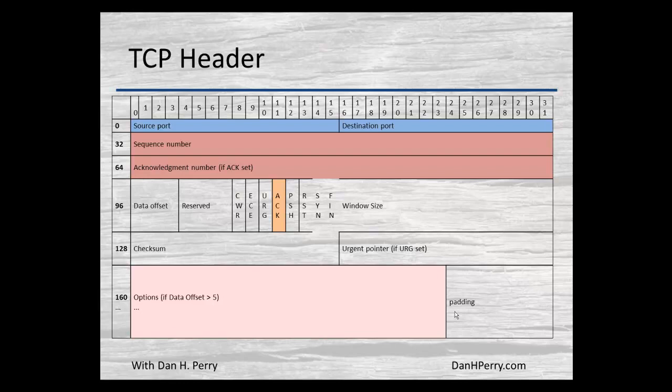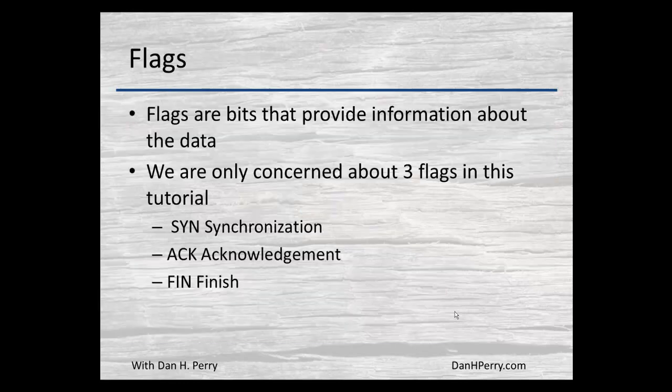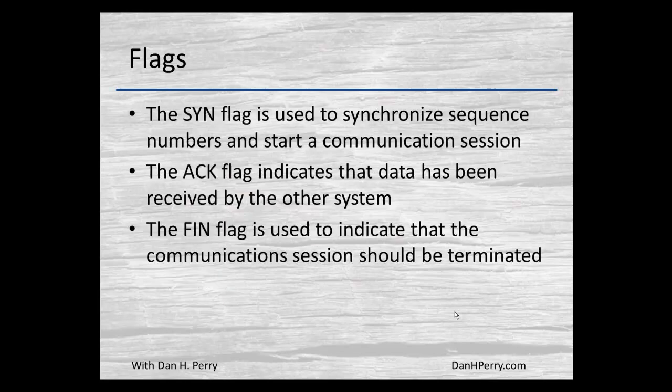There are a number of flags, but really only a few we're concerned with for the basics: the acknowledgement, the synchronization, and the finish flag. Flags are basically single bits of information — either a one or a zero — saying yes, the flag is set, or no, it's not. They give us information about the packet and the data.